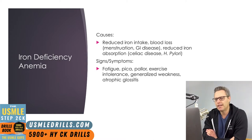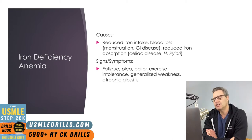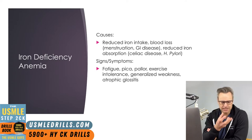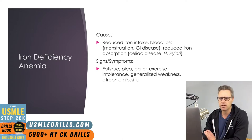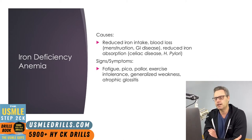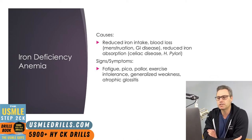Another condition to look out for is atrophic glossitis — when there is a loss of papillae on the surface of the tongue, leading to the formation of a smooth, glossy appearance of the tongue. That's also something you might see as a consequence of iron deficiency anemia.